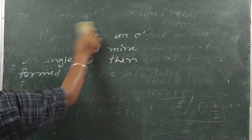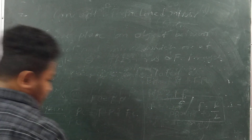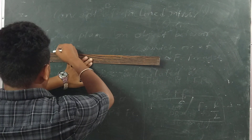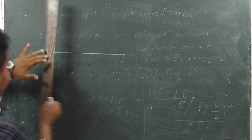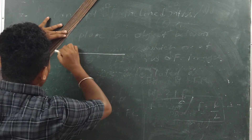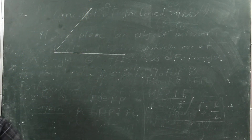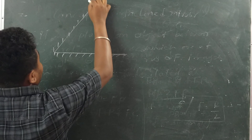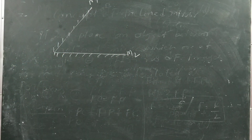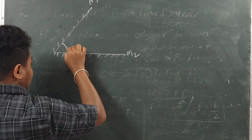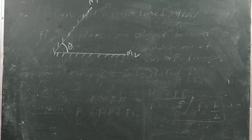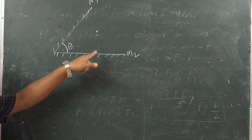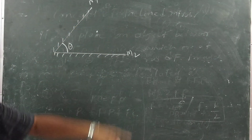If I consider two mirrors — they are inclined this way at an angle theta — this is M1 and this is M2. These two mirrors are hanging at an angle of theta. If I keep an object somewhere between these two mirrors, the number of images that can form can be calculated.